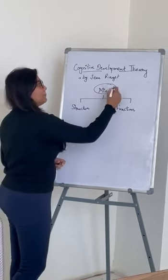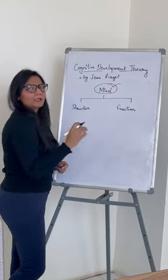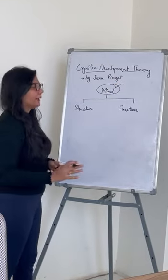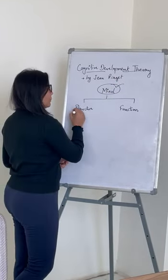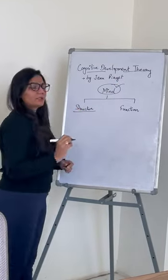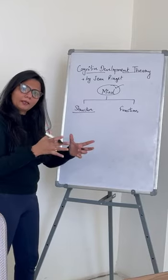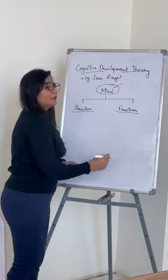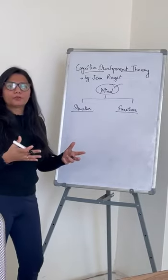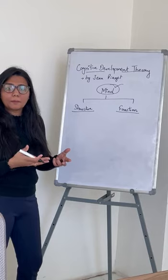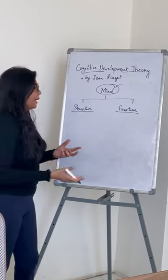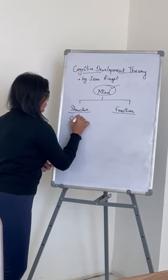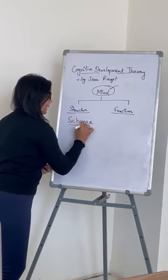There are two aspects of mind, and we have discussed both of them. One has told us about how the structure of the mind is. The other one has told us about how the function of the mind is and how the work is. The structure of the mind has given us a term called schema.